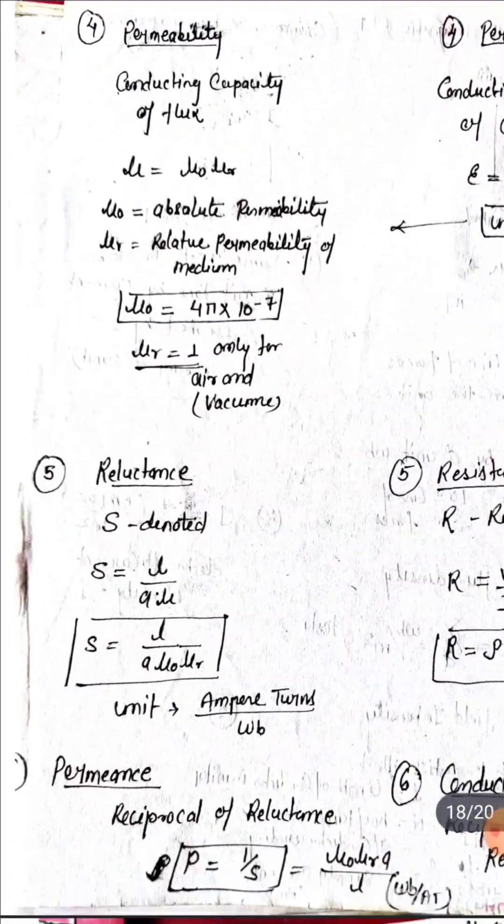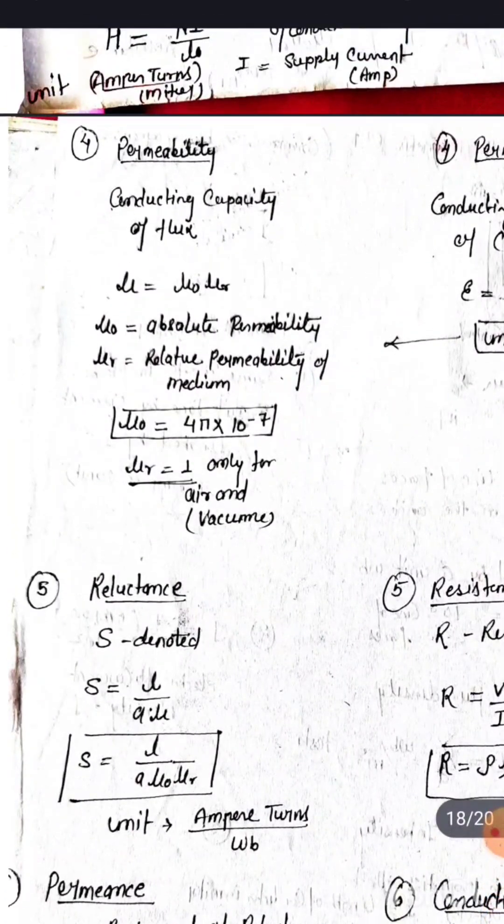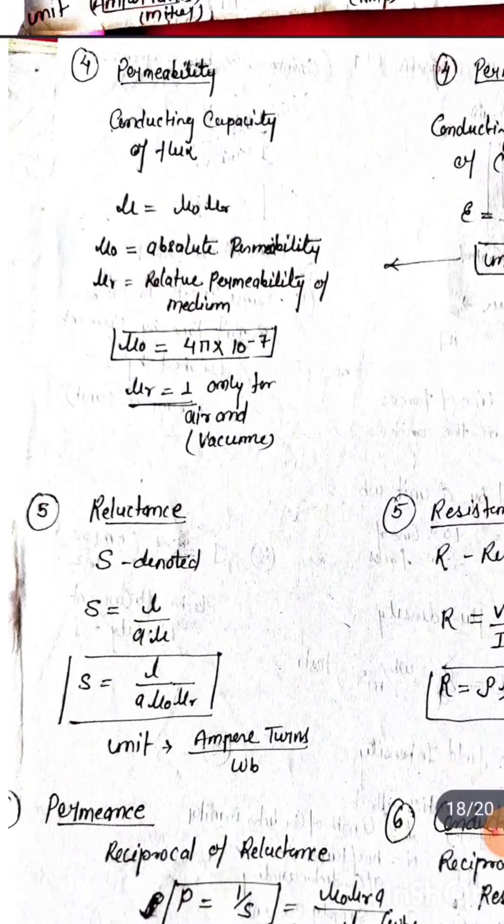In magnetic circuits there is a term reluctance, which is denoted by S.